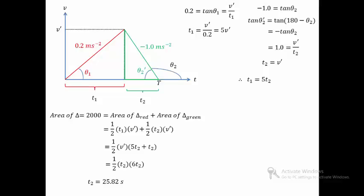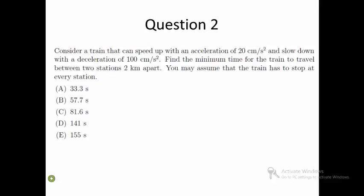The total time traveled by the train is the sum of t1 and t2, which is just 6t2. So the total time is 154.92 seconds and is approximately 155 seconds. Hence, the answer is E.